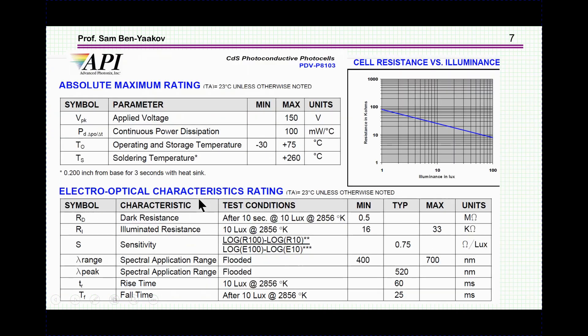And another company, the Silonex unit, gives also information. It's similar here, 250, 100 milliwatt, same temperature range, and then it has dark resistance again, light resistance at 10 lux again.